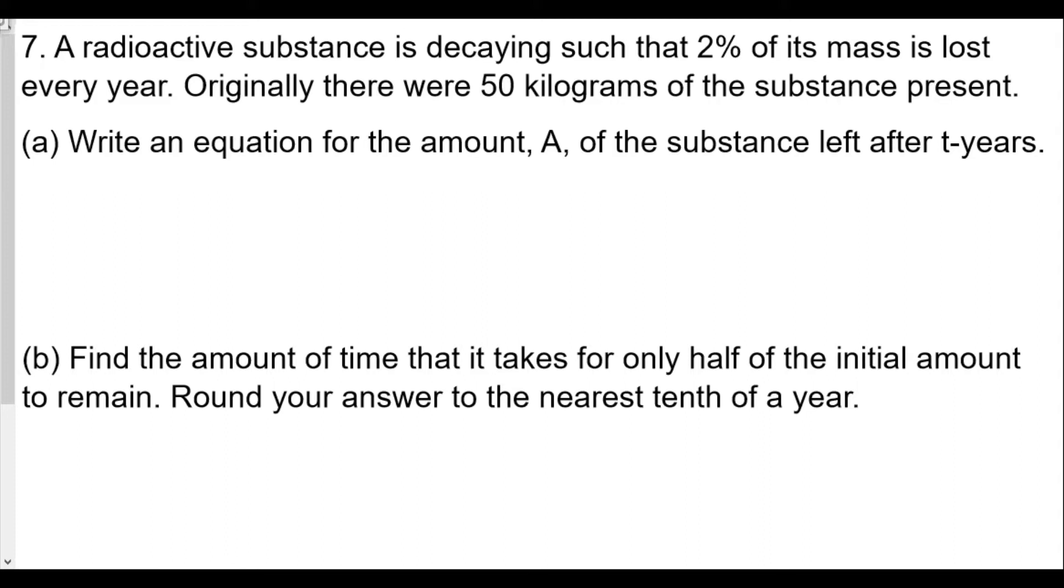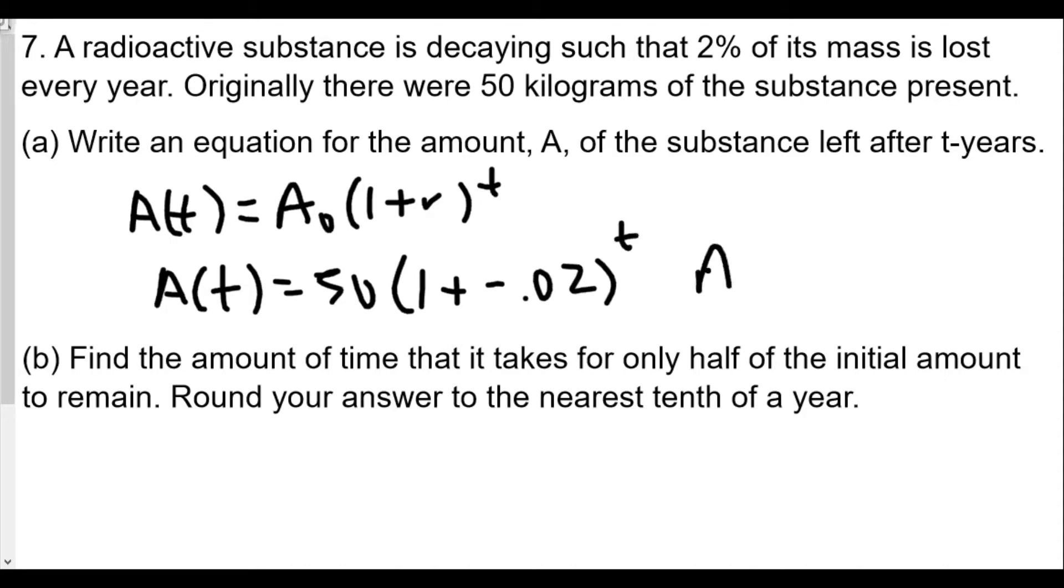So every year we're losing 2%. This would look like A(t), and originally 50 kilograms, so that's A sub 0. We have 1 plus r to the t, except r is going to be negative. So we'll have A(t) equals 50 times 1 plus negative 0.02 raised to the t power, which will look like A(t) equals 50 times 0.98 to the t power. And that will be the function we're going to use.